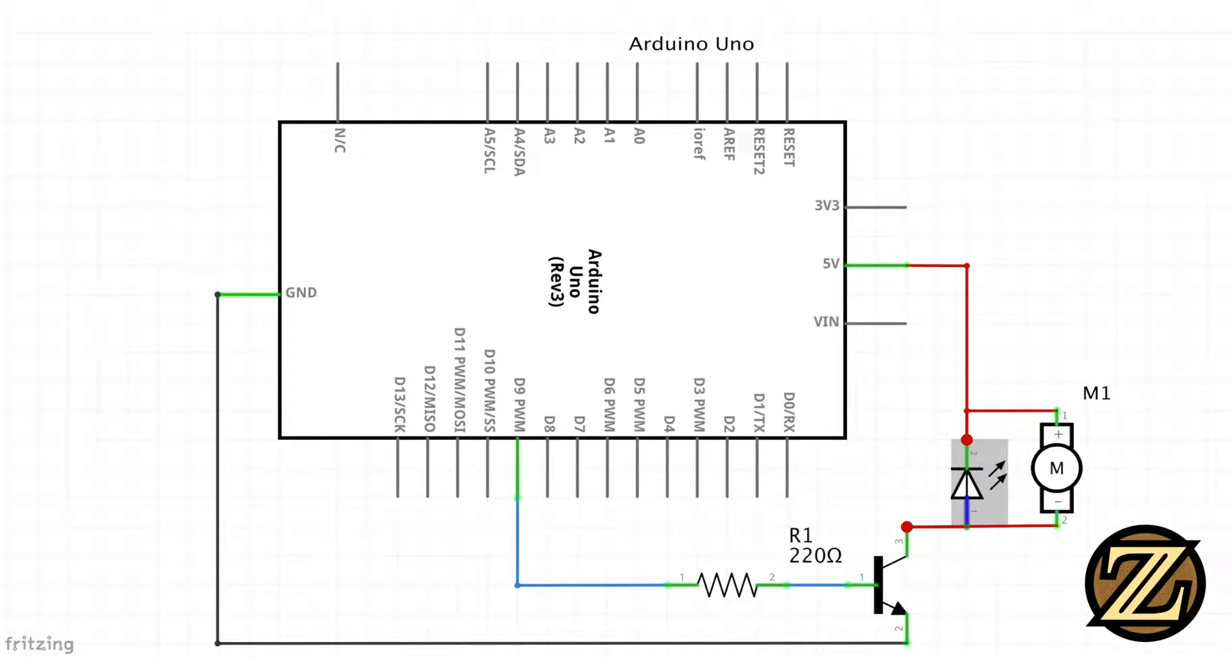Here we see a schematic of the circuit we want to build. Digital 9 will control the transistor that will in turn control the motor. We are not connecting the motor directly to a digital output pin because the digital outputs can only safely deliver 40 milliamps. If we draw more than this we will cause damage to the Arduino.